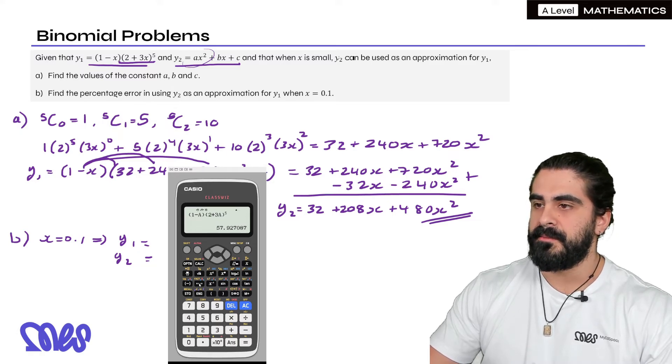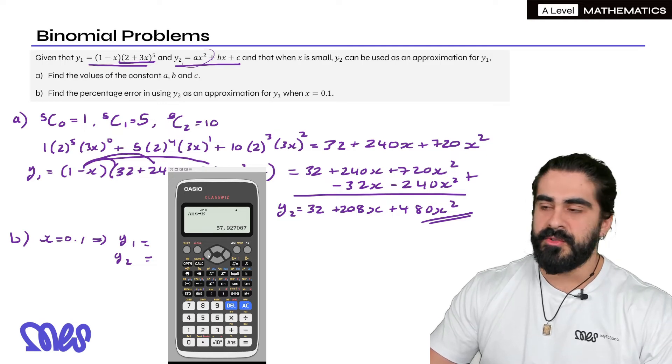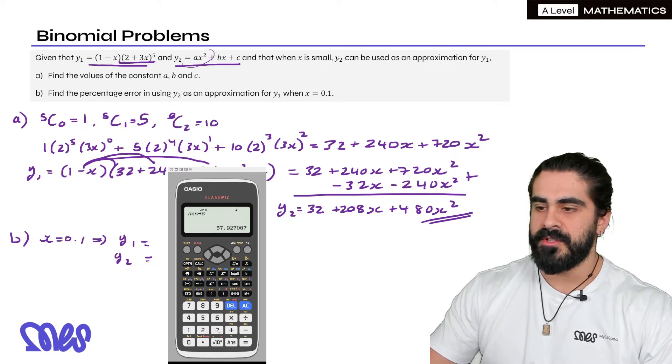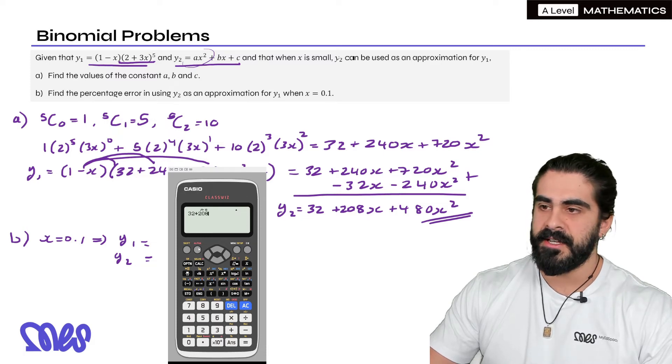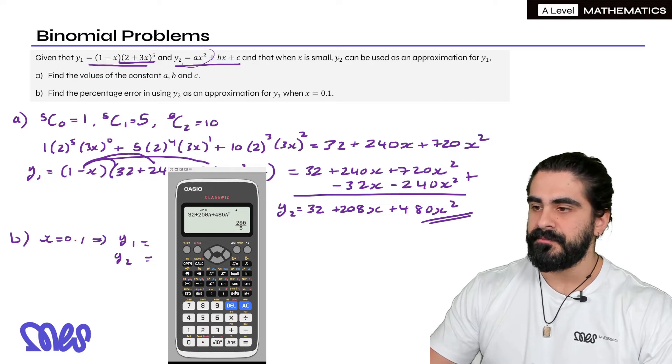Now I'm going to store that value as well so I can use it later. So we press the store button and b. Now let's go ahead and sub into y2. So y2 was 32 + 208a + 480a^2. So you get a bit of a nicer number there.